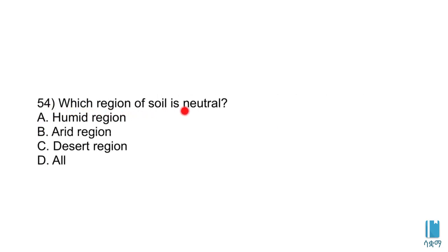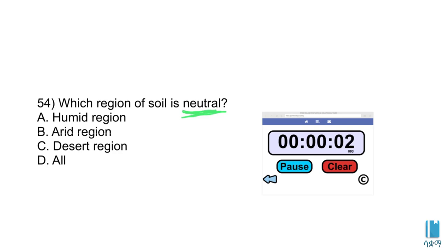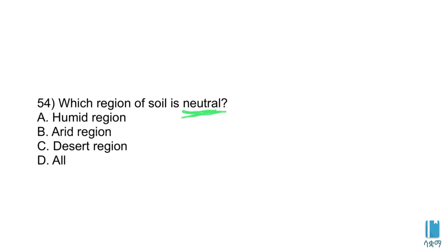Which region of soil is neutral? The neutral soil is defined by its acid, basic pH, and pH value. Soil in the humid region is neutral, while acidic soil is found in chloride-rich conditions with carbon dioxide. The desert region has basic soil with sodium and carbon dioxide compounds.